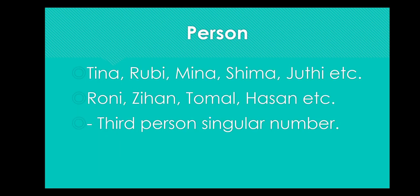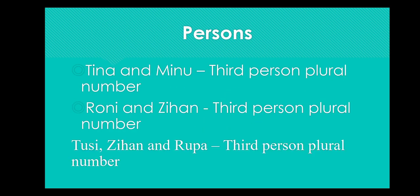Today we will learn that names are also persons. Like Tina, Ruby, Mina, Shima, Jyothi, Rani, Jehan, Tamil, Hassan, etc. When any single name comes, it is always third person singular number. But if we say 'Tina and Minu' together, it is third person plural number. 'Rani and Jehan' together — third person plural number, because there are more than one person. Similarly, Tushi, Jehan, Rupa — third person plural number.